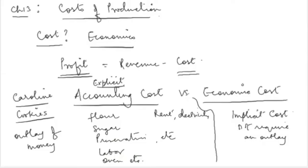She might also require machines like ovens and blenders, so any expenditure on purchasing these capital goods would be included in cost. Then there are fixed costs like rent for the place of operation, and electricity to run her operations. All of these require some exchange of money — these are called accounting costs or explicit costs.